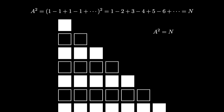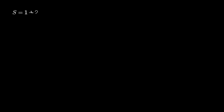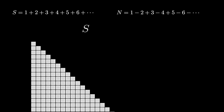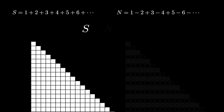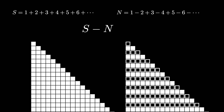So A squared equals N, but A squared equals (1/2) squared equals 1 fourth, and therefore N equals 1 fourth. Our value assignment to A, along with this checkerboard-to-triangular-array argument, allows us to assign the value 1 fourth to N. Now we can see our final visualization: S is the infinite triangular array of solid squares, and N is the triangular array with rows alternating between filled and hollow squares. We can then imagine negative N as inverting that array so rows alternate between hollow and filled squares.